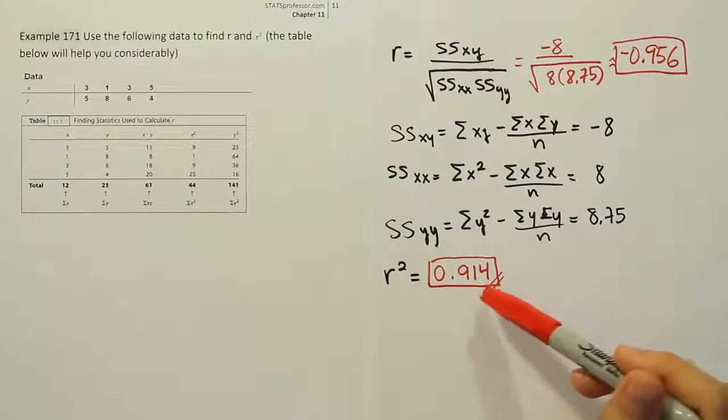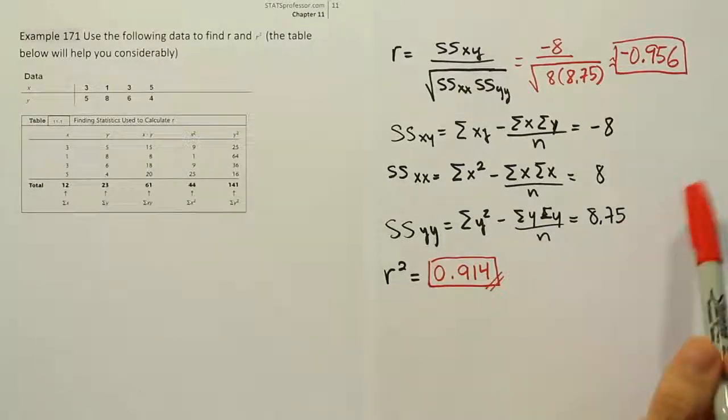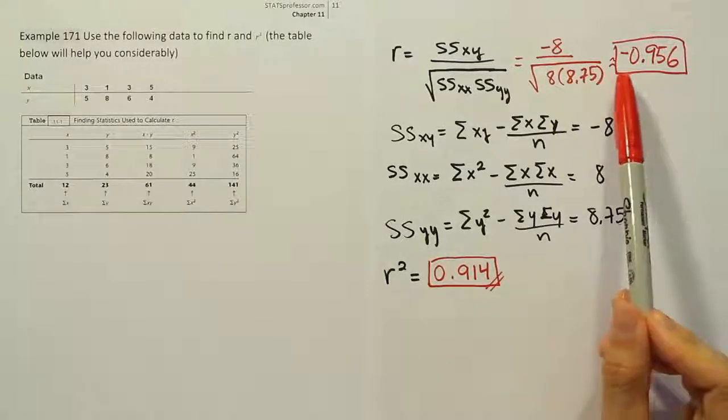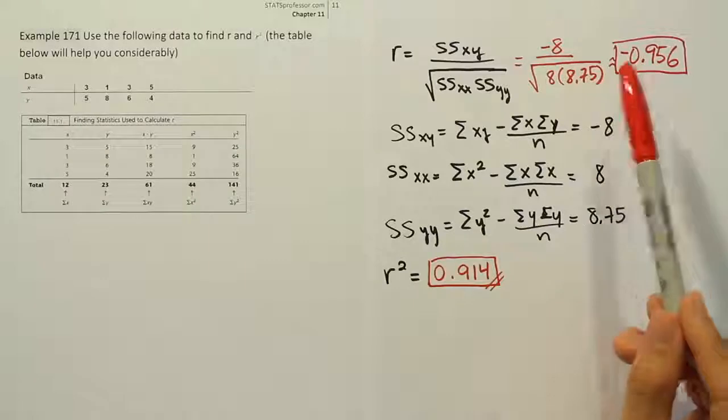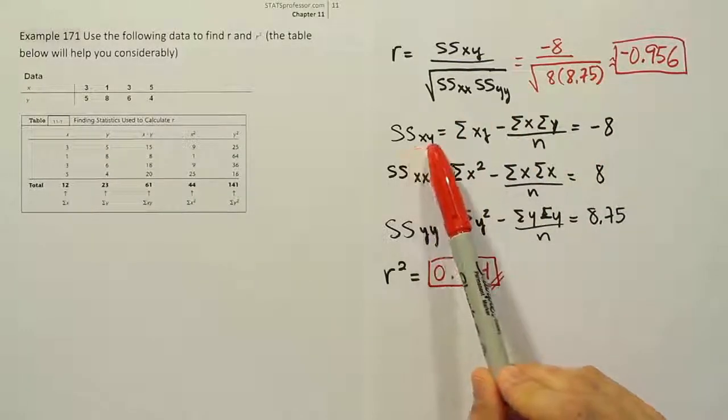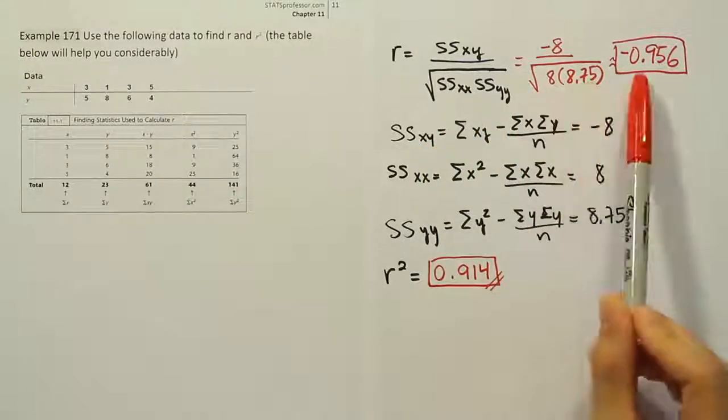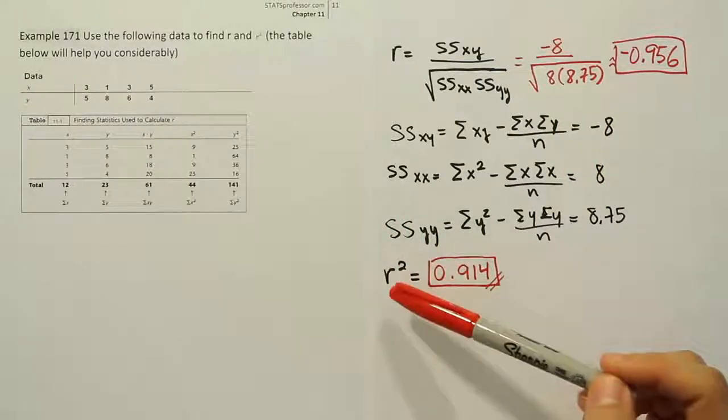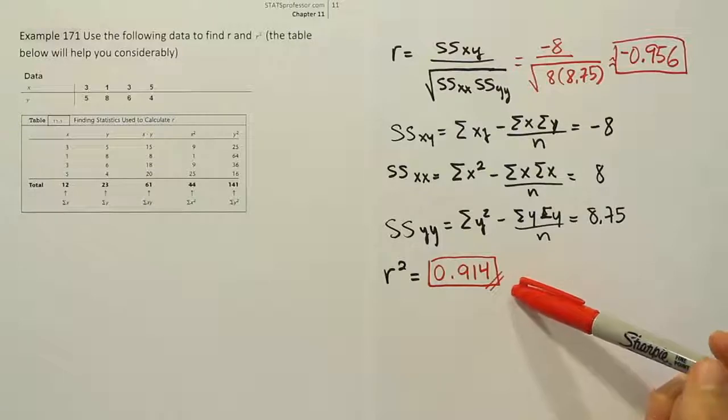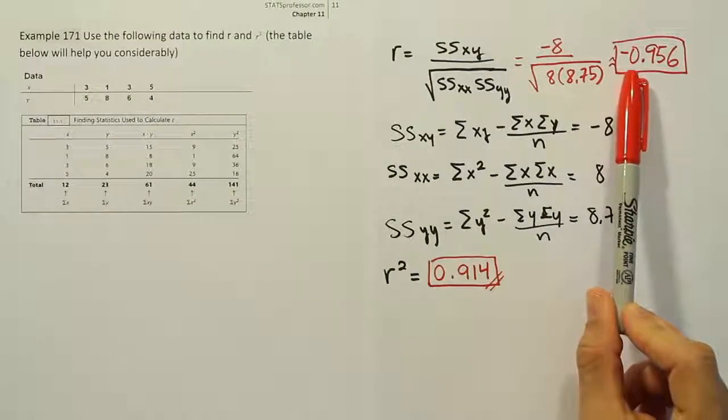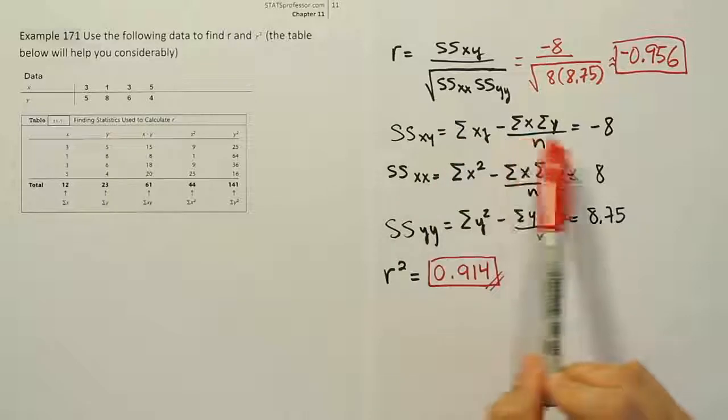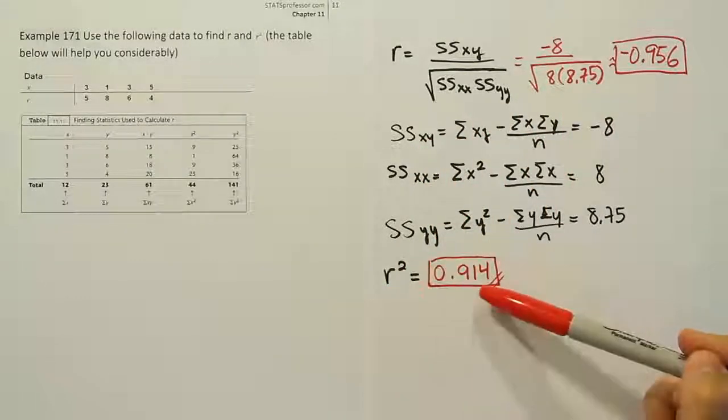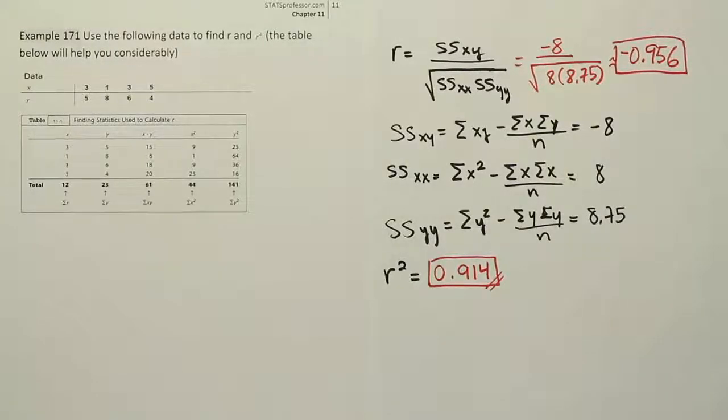Ultimately, in the end, by the way, if they had given us r squared and asked us to find r, keep in mind when you take the square root of this, you will get 0.956, but you will not get the negative. So please remember that you would need to see this sum of squares xy value—see that it's negative—to know that r would be negative if you were provided with just r squared. Or you could look at the slope. If the slope of the regression line is negative, then the r here has to be negative. So if this is negative, then r is negative. If the slope is negative, then r is negative. r squared, of course, will always be positive. And that's it.